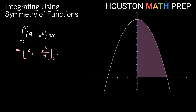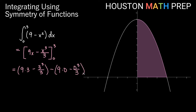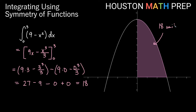We evaluate this from x equals 0 to x equals 3 — plugging in the top bound first, then subtracting the result for the bottom bound. Plugging in 3: 9 times 3 minus 3 cubed over 3. Plugging in 0: 9 times 0 minus 0 cubed over 3, which is 0. So we get 27 minus 27 over 3, which is 27 minus 9, giving us 18. This region is 18 square units of area.